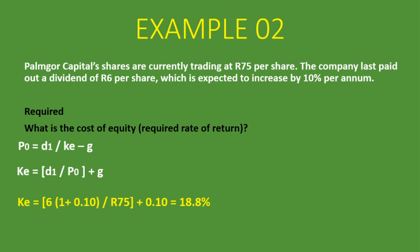To calculate KE: D1 is 6 times 1 plus 10%, which we calculated in our earlier example. We divide that by the current market value of the share, R75. Then we add the growth rate. You get 0.188, which multiplied by 100 gives 18.8%. So if you're asked to calculate the cost of equity using the dividend growth model, this is the formula you use: KE equals D1 divided by P0, plus G. The answer is 18.8%.